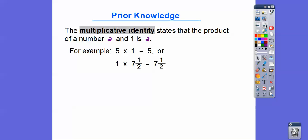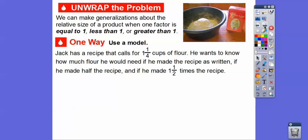Let's look at some prior knowledge. The multiplicative identity states that the product of any number times one is always that number. For example, five times one equals five, or one times seven and a half equals seven and a half. So we can make generalizations about the relative size of a product when one factor is equal to one, less than one, or greater than one.